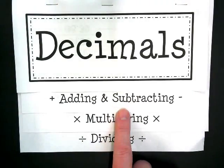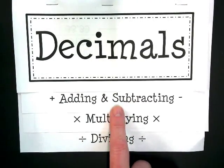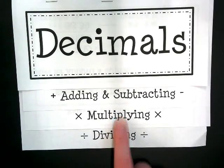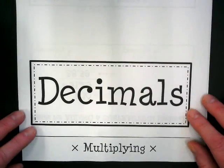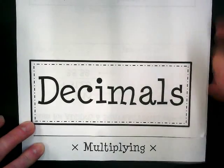I want you to notice the order we want the foldables to be, or the flips to be in, is adding and subtracting, and then multiplying and dividing. When you pick up your papers, they're not really in that order, so you need to pay attention to that.